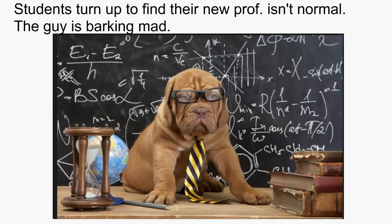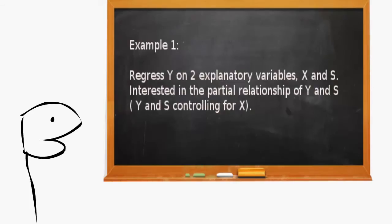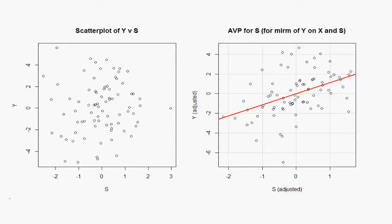The scatter plot Y versus S shows no relationship. In contrast, the AV plot shows there is a positive linear relationship, and we are not surprised as the one scatter plot shows marginal relationships, whereas MLR is about partial relationships.